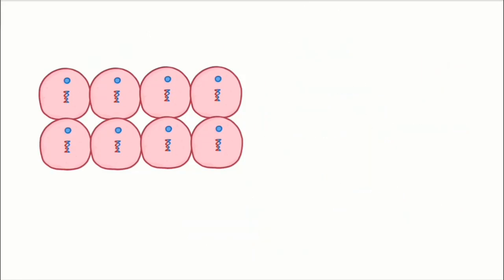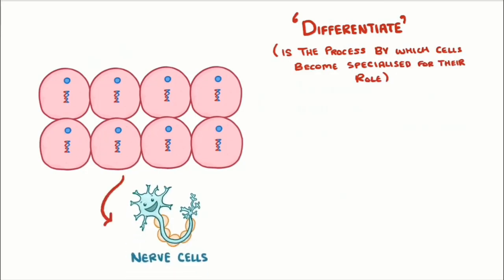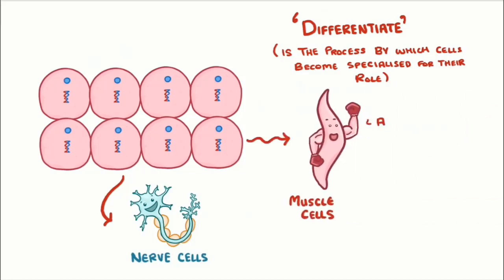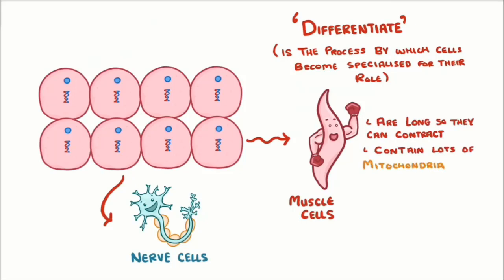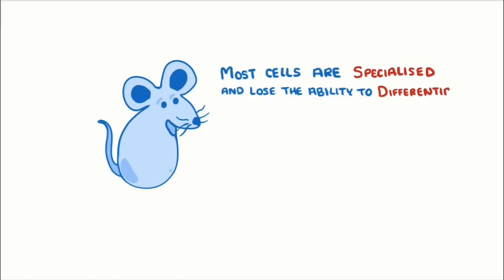As the organism further develops, some of its cells will start to differentiate — the process by which cells become specialized for their role. In animals, cells could differentiate into nerve cells, muscle cells — which are long so they can contract and contain lots of mitochondria for energy — and sperm cells. Once an animal is fully developed, most of its cells are specialized and lose the ability to differentiate anymore.